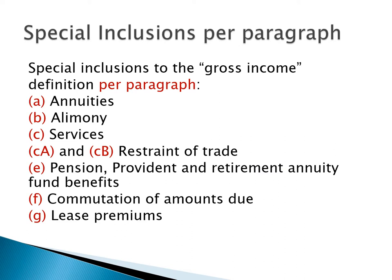We will look at the most common Special Inclusions to the gross income definition per paragraph. They are: paragraph A — annuities; paragraph B — alimony; paragraph C — services; paragraph CA and paragraph CB — that deals with restraint of trade.